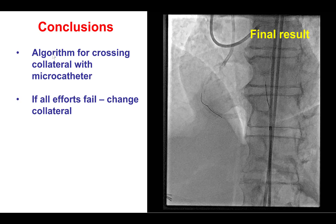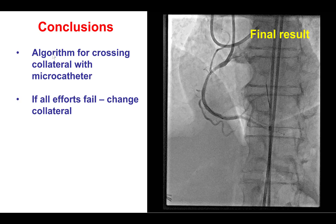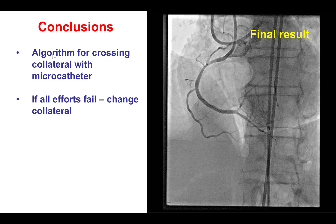But if all these efforts fail, one option is to try to cross with the retrograde wire into the proximal true lumen if the occlusion is very short — which was not feasible in this case — or otherwise try a different collateral that will allow crossing with a microcatheter, as was done in this case.